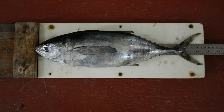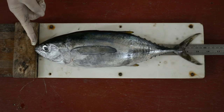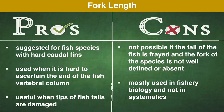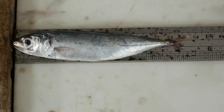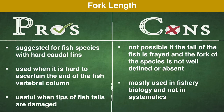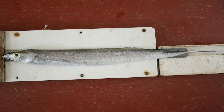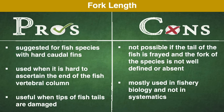The fork length is measured from the same starting point at the tip of the snout to the posterior end of the middle caudal rays, the point where the tail fin separates. This measurement is used instead of standard length for fishes on which it is difficult to ascertain the end of the vertebral column. Also, fork length becomes handy in situations when damage to the tip of the tail can make it difficult to measure total length, which is often the problem with small samples like anchovies. However, this approach is not possible if the tail of the fish is frayed and the fork of the species is not well-defined or absent, like an eel's. Fork length is mostly used in fisheries biology and not in systematics.